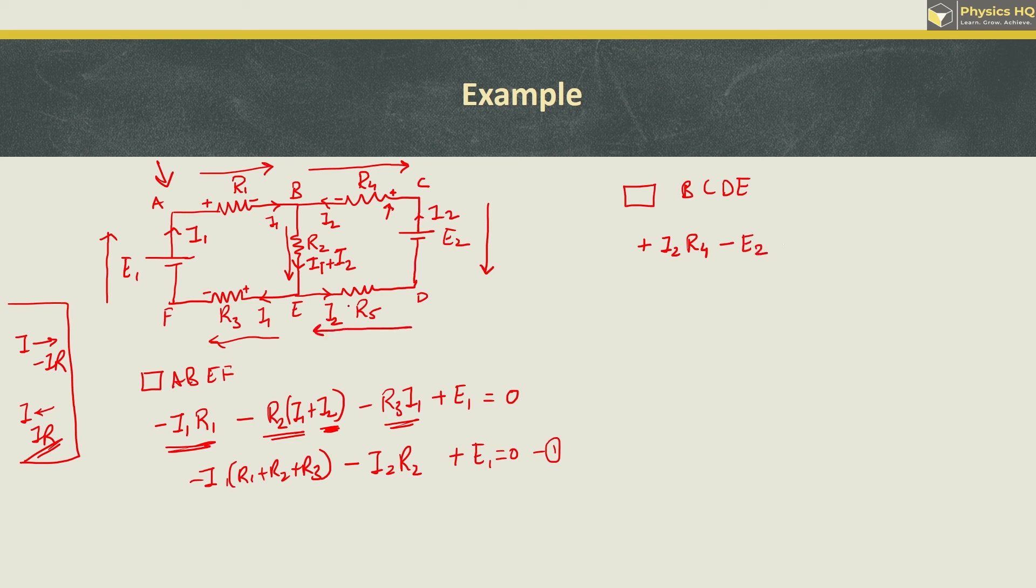While going from D to E, once again we are opposite to the current, so it's plus I2 R5. While going from E to B, again opposite to the current, so it's plus R2 times (I1 plus I2). Finally we reach B, so this equals zero. Please understand, you can go clockwise or anti-clockwise, you'll get the same result. Now we simplify this.